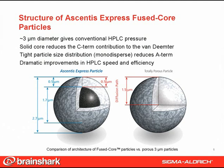So how do Ascendis Express columns achieve high-speed and high-efficiency separations on any HPLC, UPLC, or UHPLC system? It's all about the structure of the particle, its unique solid core design. This slide shows what we mean by fused core. The drawing on the left is a cutaway of a fused core particle, and on the right is a standard totally porous particle that has been used for HPLC since the 1970s. The Ascendis Express particle is about the same size as a 3-micron totally porous particle, so it gives roughly the same pressures as a 3-micron particle. This has speed implications — you can run these columns at much higher flow rates on conventional instruments than you can run a sub-2-micron particle column.